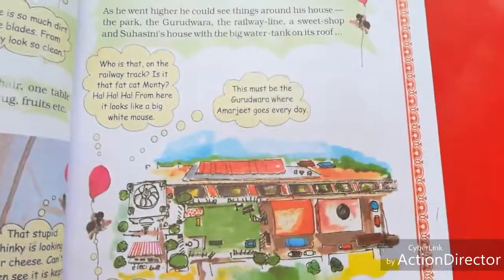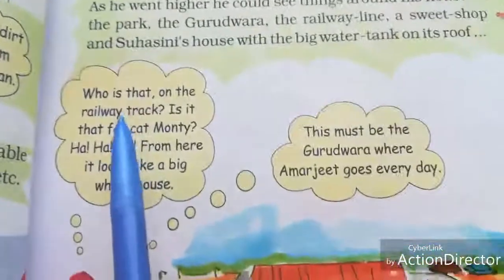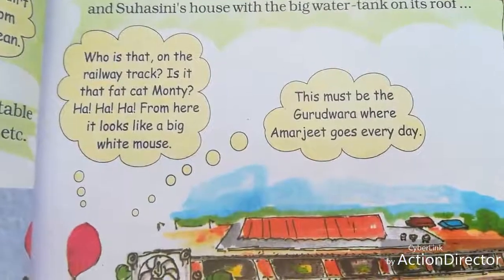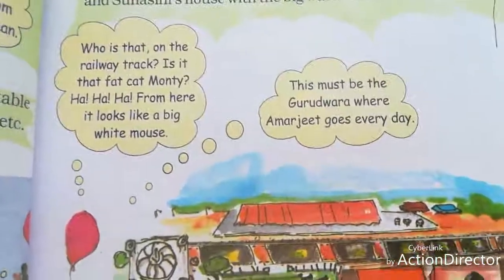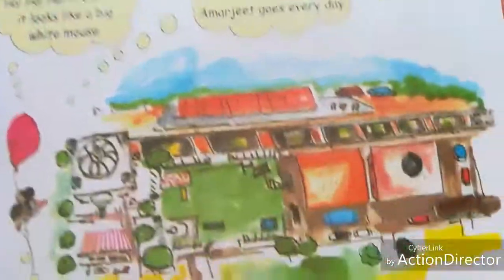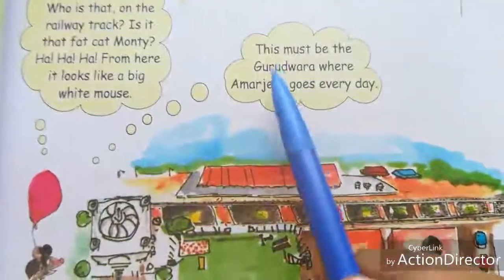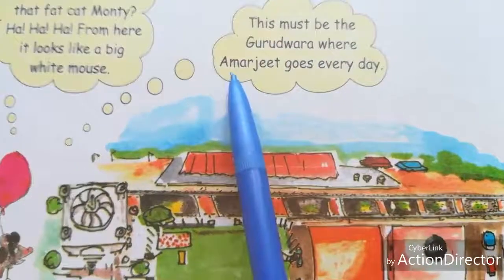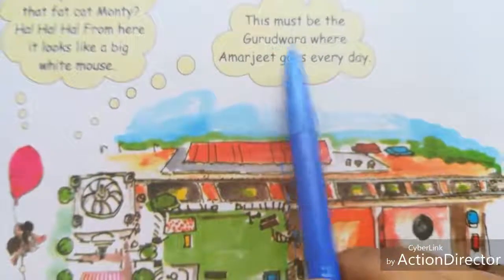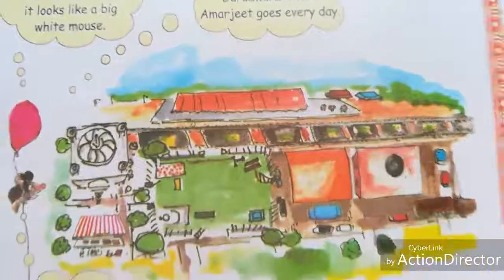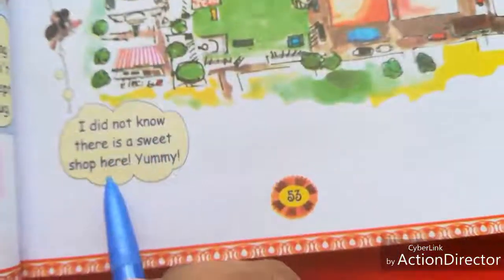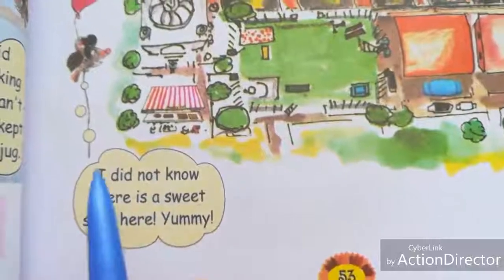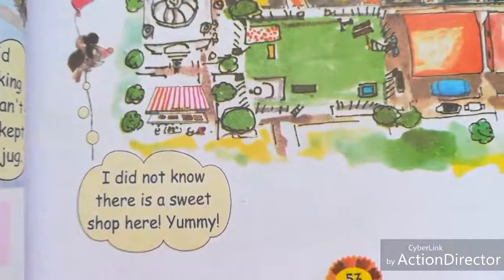Gappu said, 'Who is that on the railway track? It is that fat cat Monty! From here, it looks like a big white mouse.' And: 'This must be the Gurdwara where Amarjit goes every day. I did not know there is a sweet shop here — yummy!'